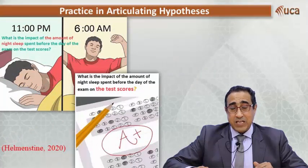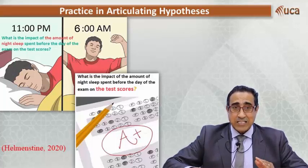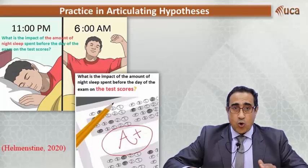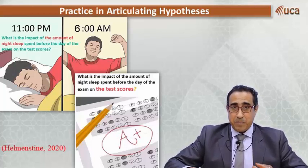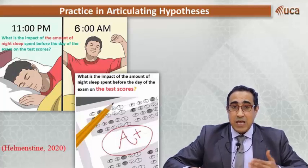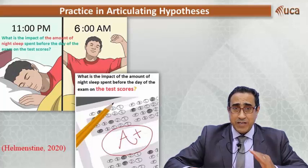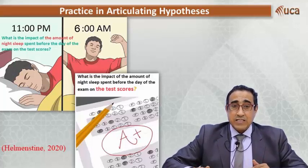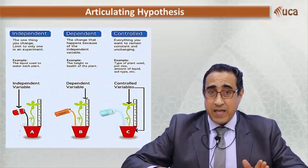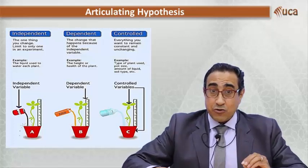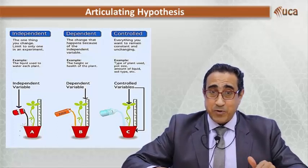The second exercise: here we have the research question — 'What is the impact of the amount of night sleep before the day of an exam on test scores?' For example, a person sleeps at 11 PM and wakes up at 6 AM. What are the impacts of this habit on the score? You should write the hypothesis and then identify the variables. The third exercise gives you the independent, dependent, and controlled variables, and you should construct the research question and the hypothesis.